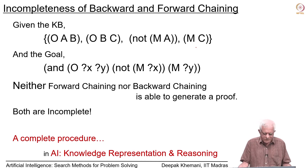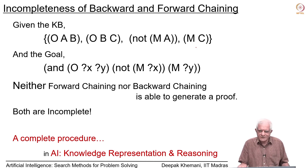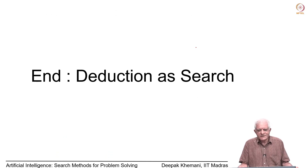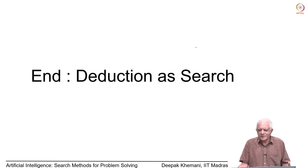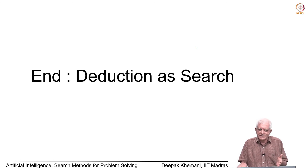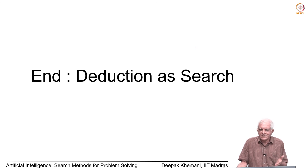There exist complete methods for theorem proving in first-order logic, and we will leave that for another time. Hopefully some of you will join the course called 'AI: Knowledge Representation and Reasoning,' which will be offered next semester. With that, we end our study of reduction as search. Logical reasoning is a very important part of an agent's capabilities, and underlying this logical reasoning is a search algorithm. We saw two search algorithms — forward chaining and backward chaining — but they turned out to be incomplete. There is another search algorithm called the resolution refutation method, which is complete for first-order logic.